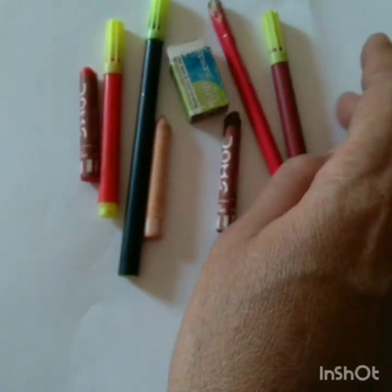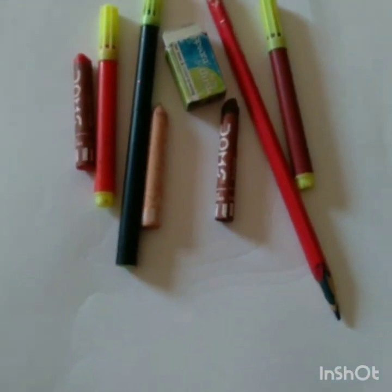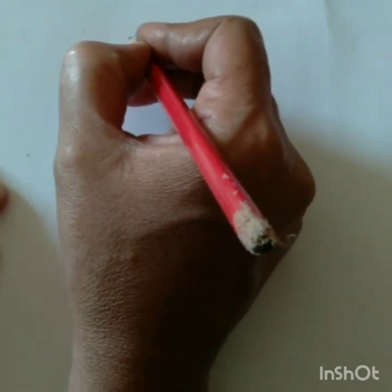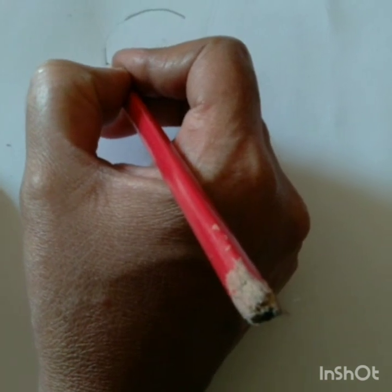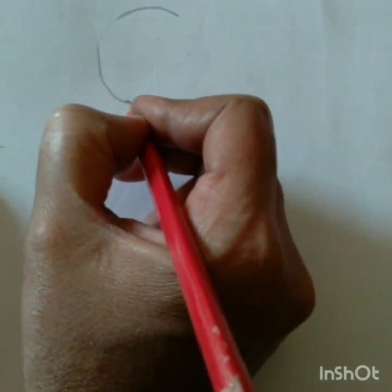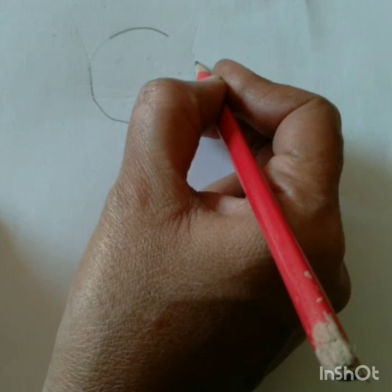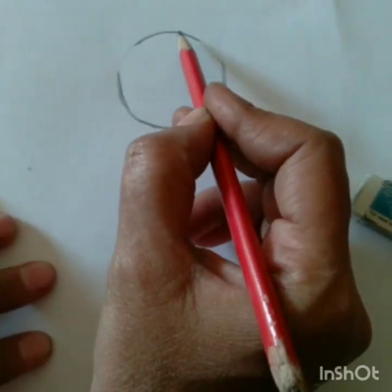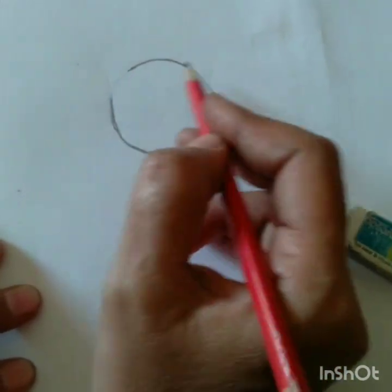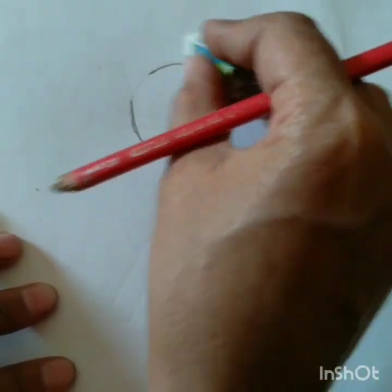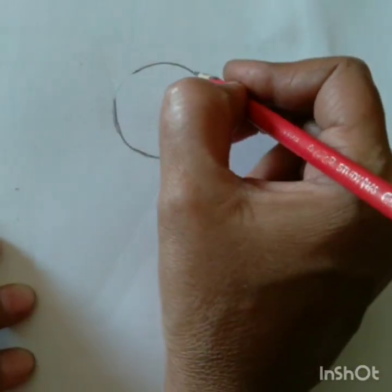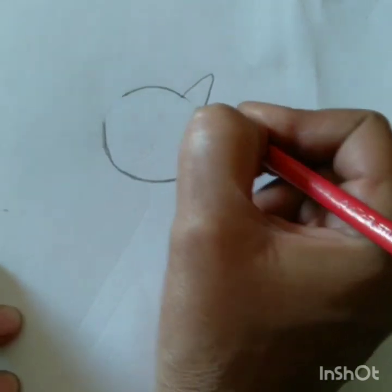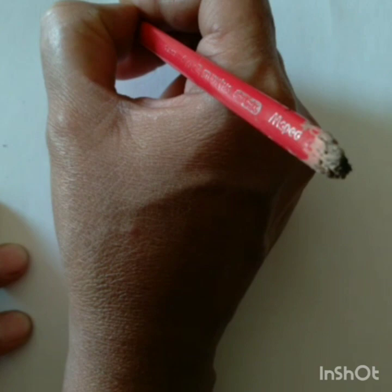Let's start. Children, first we are drawing the circle. First draw a circle. Then erase this part of the circle and draw the ears of the cat.